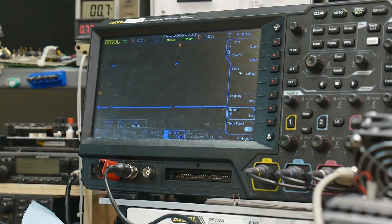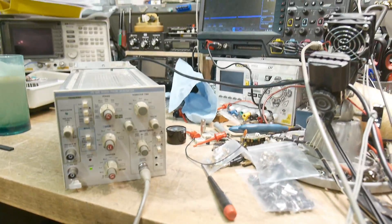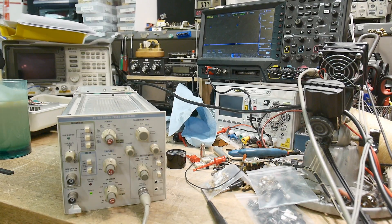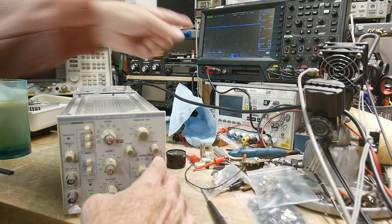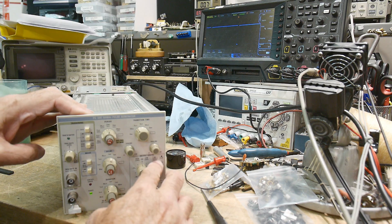All right, so we have these positive going pulses. Down on the box, we have complement. We can press that. Now we have negative going pulses. So this just inverts the signal.